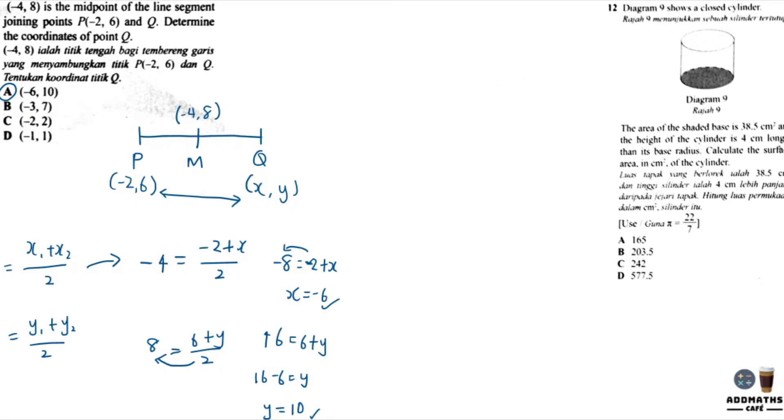Question 12 shows a diagram with a closed cylinder. It says that the shaded area down there is 38.5 cm squared and the height is 4 cm longer than the radius.